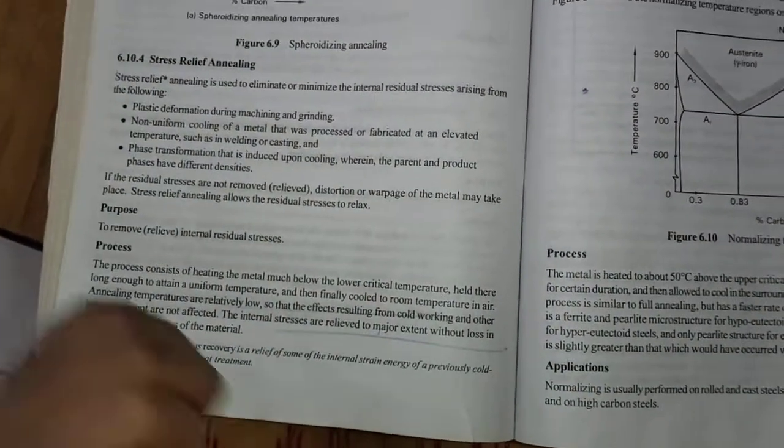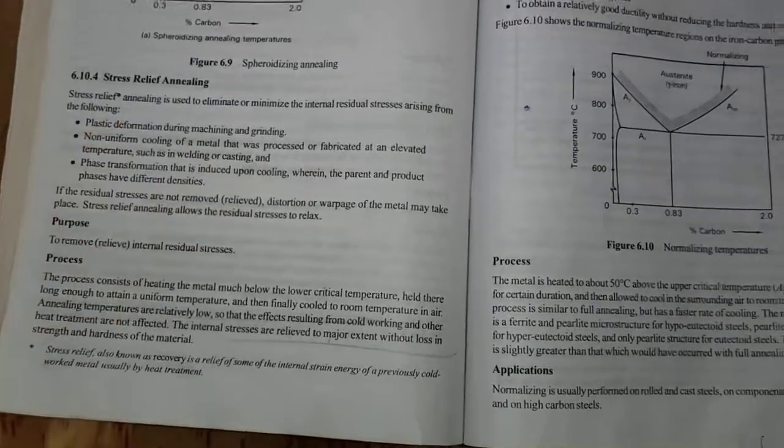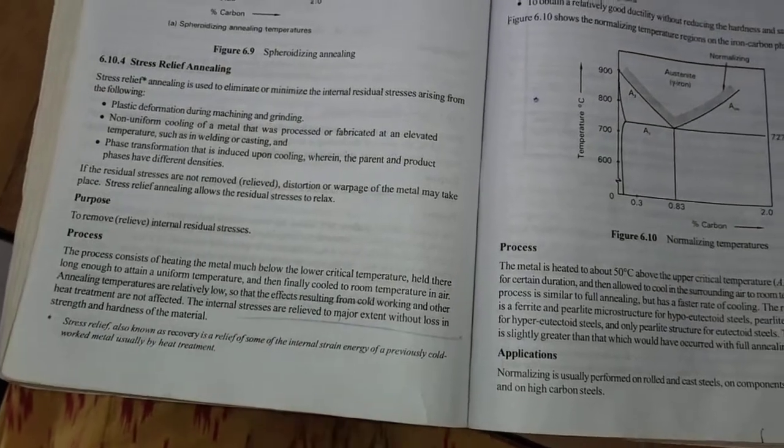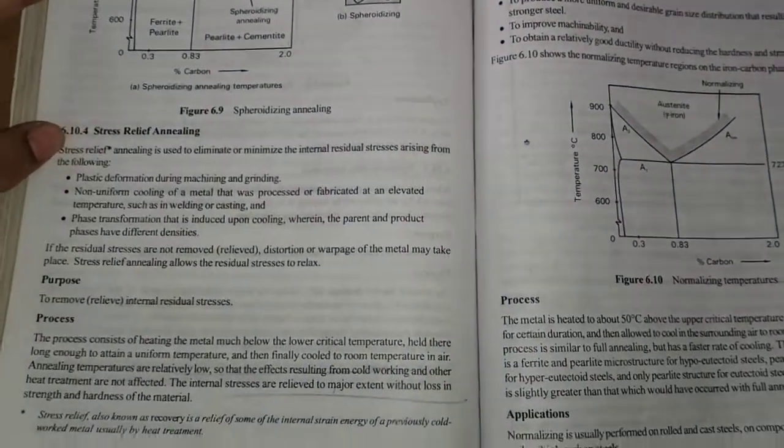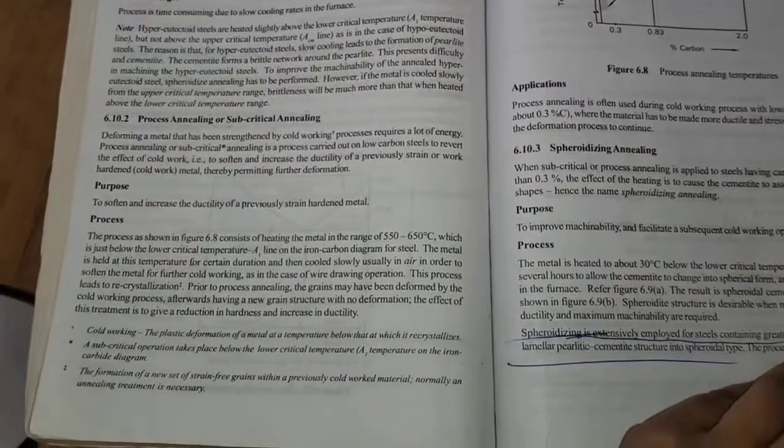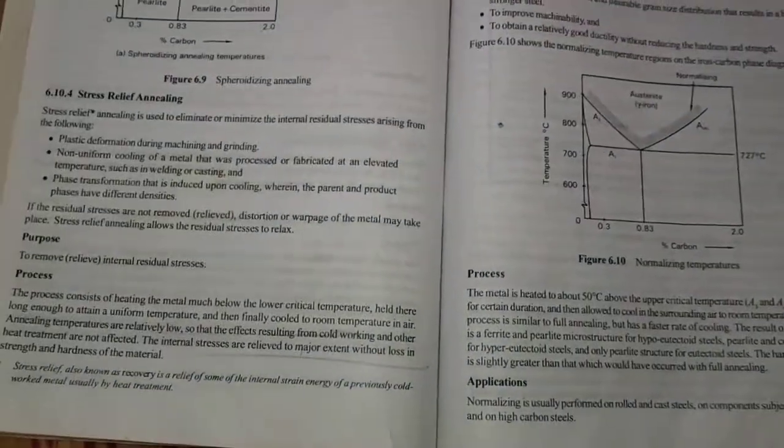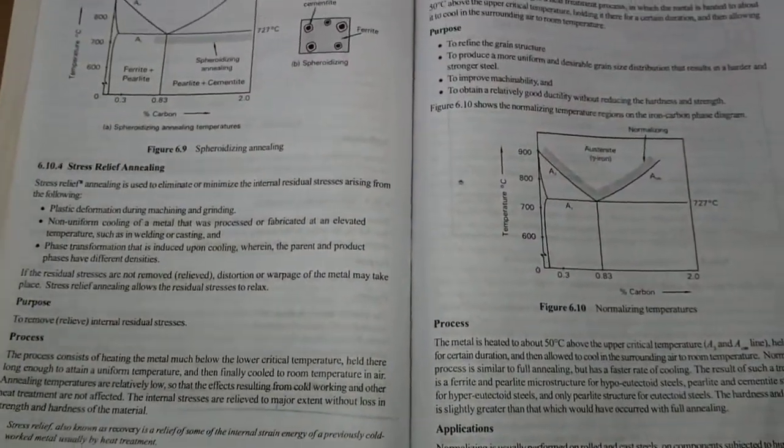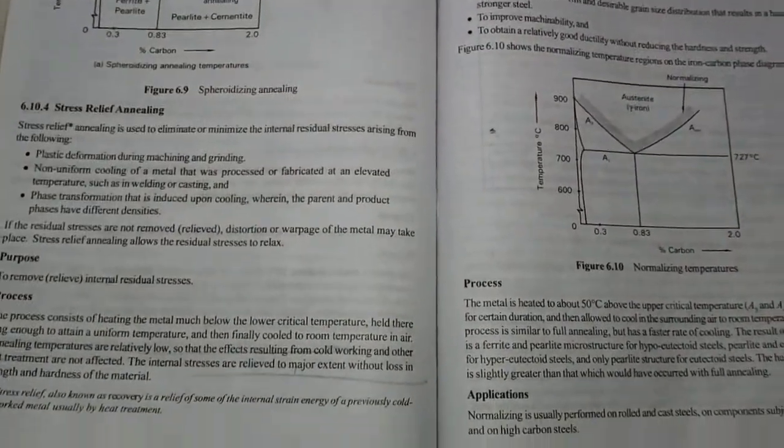Stress relief annealing is mainly used to remove internal stresses. Previous annealing processes were discussed for the same reason, but this is much more efficient compared to others. Some annealing processes have conditions - like spheroidizing annealing cannot take place directly, and process annealing requires prior cold working.